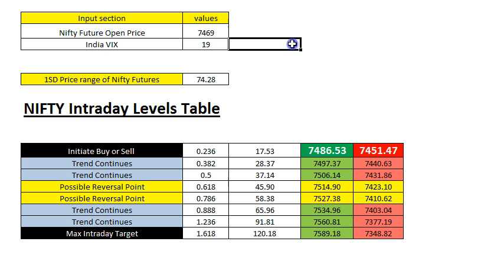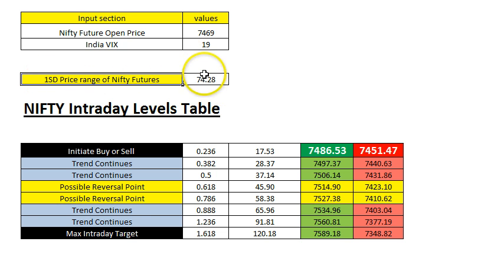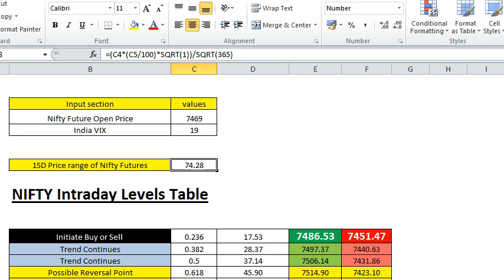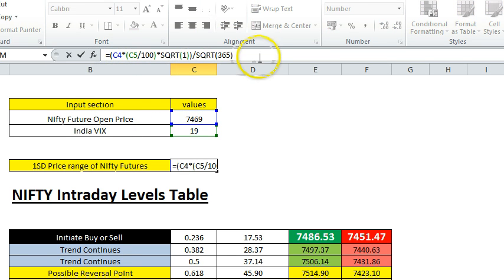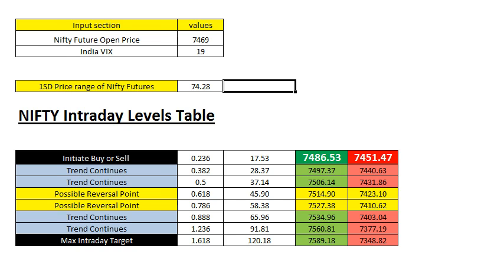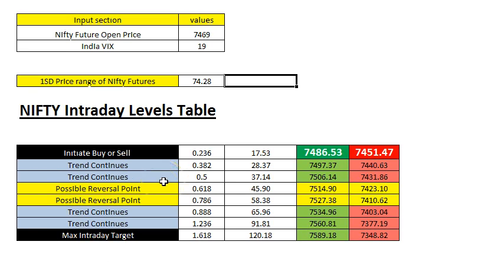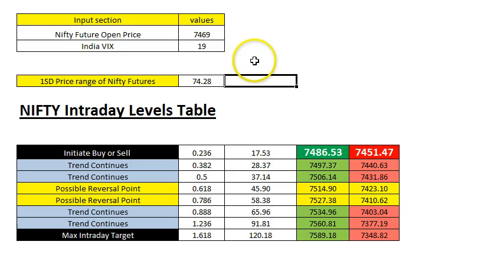You can enter the VIX value in decimals as well. If you want a 2SD range or 3SD range instead of 1SD, you just need to update the formula — in the bracket you can say multiplied by 2 or 3 to get the 2SD or 3SD levels. I normally use this only for Nifty; for those who want to use it for stocks I would say max 2SD range is enough. Just modify the formula so you can use the same Excel sheet.